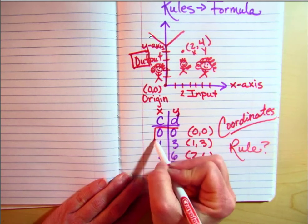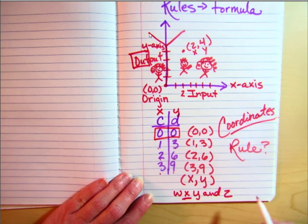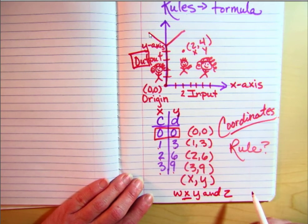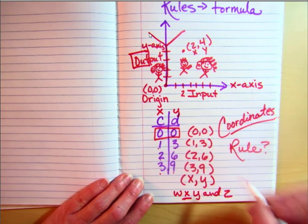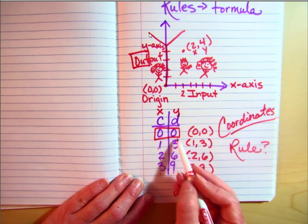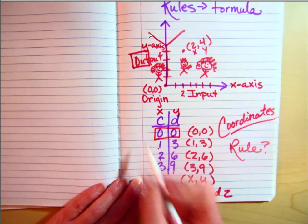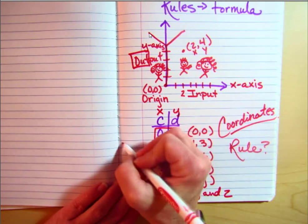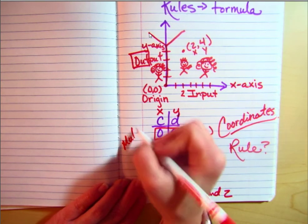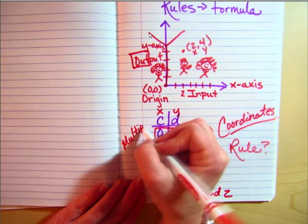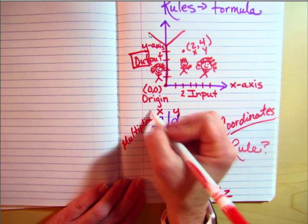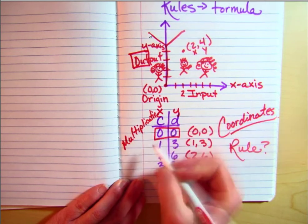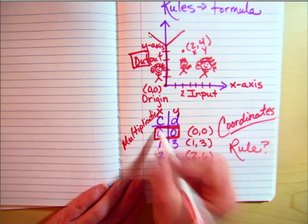Multiplicative rules always have 0, 0 in the table or on the graph because 0 times any number is 0. So this is a way to tell if it's multiplicative. Multiplicative graphs always start at the origin: 0, 0.